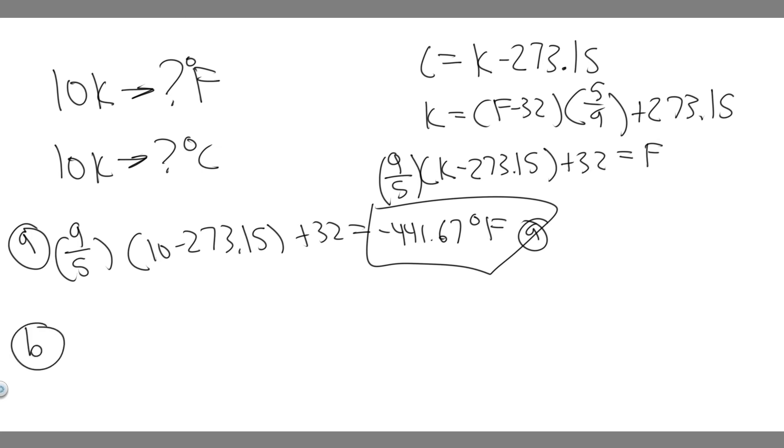Now let's do B. So B is a lot easier. You're just going to subtract 273.15. So just plug in 10 minus 273.15, and you're going to find that this equals minus 263.15.